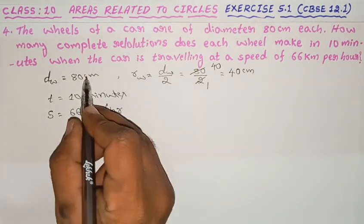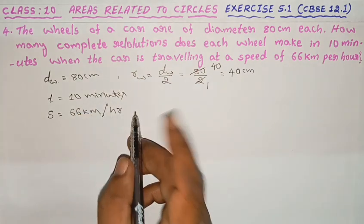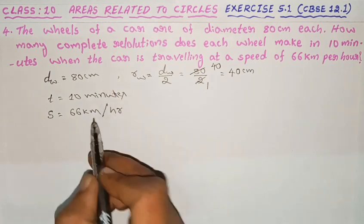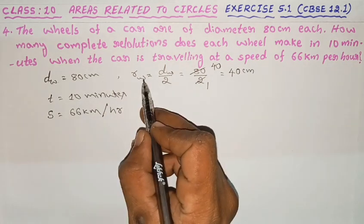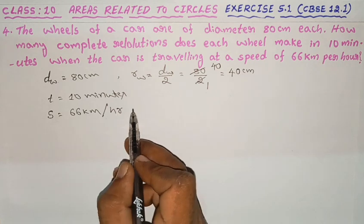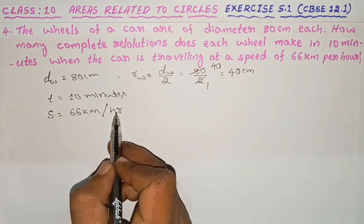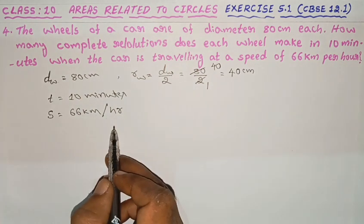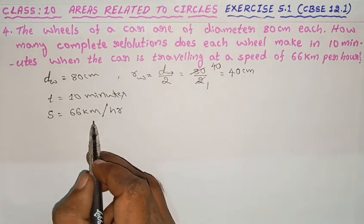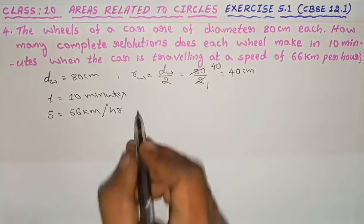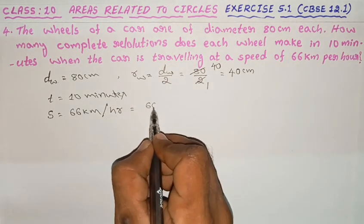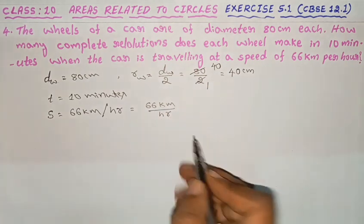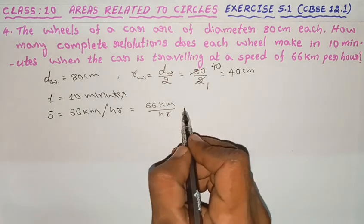We need to have the same units in each calculation, so we will convert everything to the same units — centimeters. 66 km per hour needs to be converted.